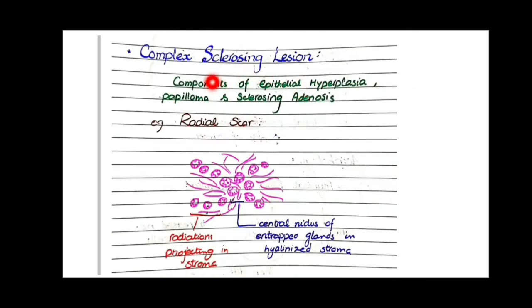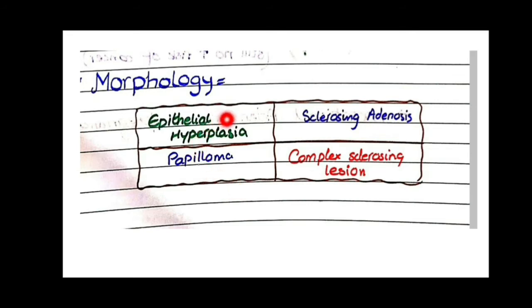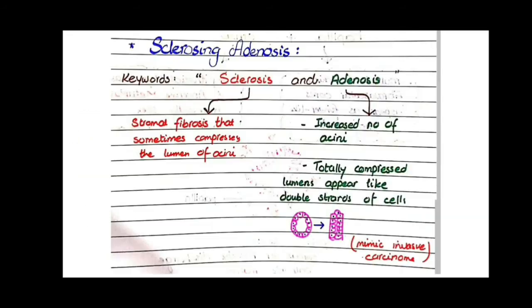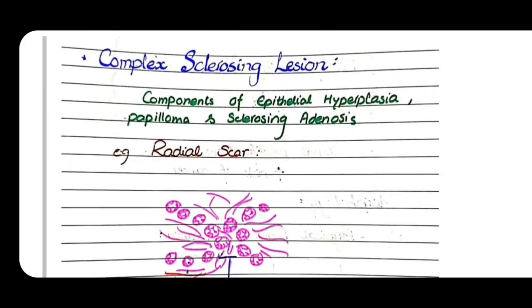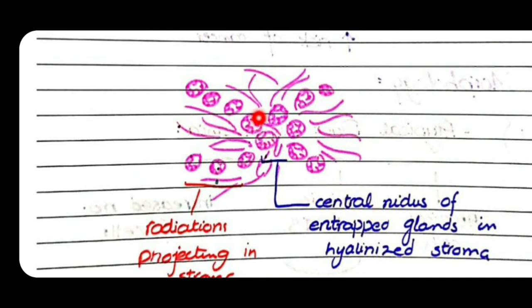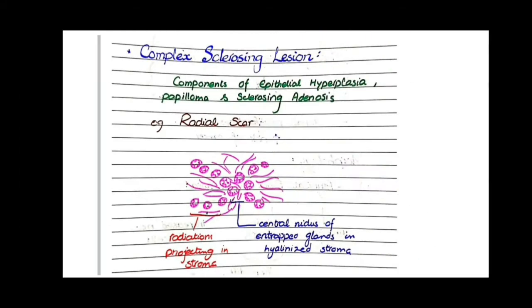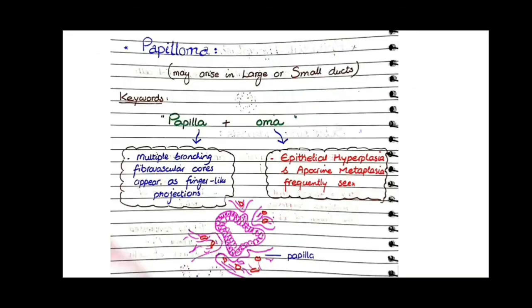The last keyword is complex sclerosing lesion. As the word complex implies, you will see components of epithelial hyperplasia, papilloma, and sclerosing adenosis all together. One example of complex sclerosing lesion is radial scar, in which you see a central nidus of entrapped glands in a hyalinized stroma, with glands radiating outward into the stroma like radiations. Radial scar is an example of complex sclerosing lesion.